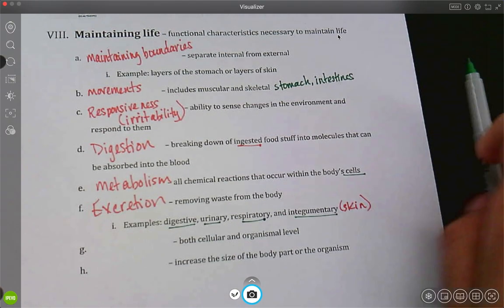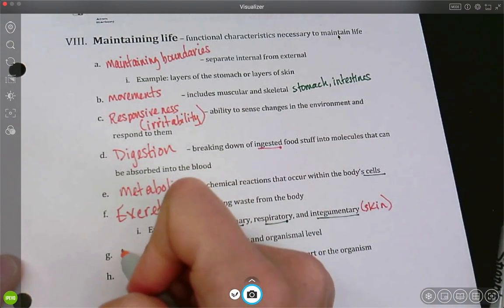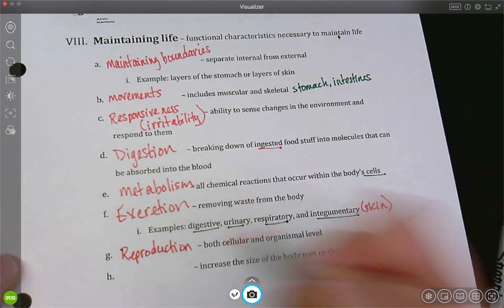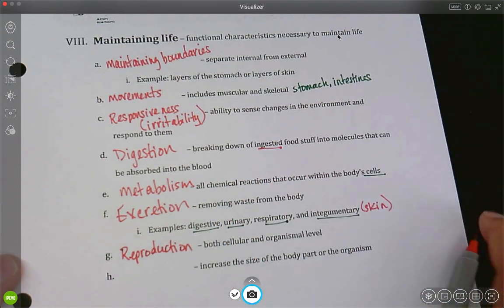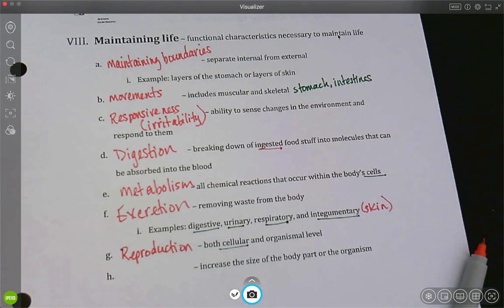The last two are reproduction. So I need to be able to produce offspring, but don't forget it's got to be cellular too. I've got to be able to have a cut and it repair itself. So it's got to also be on the cellular level.